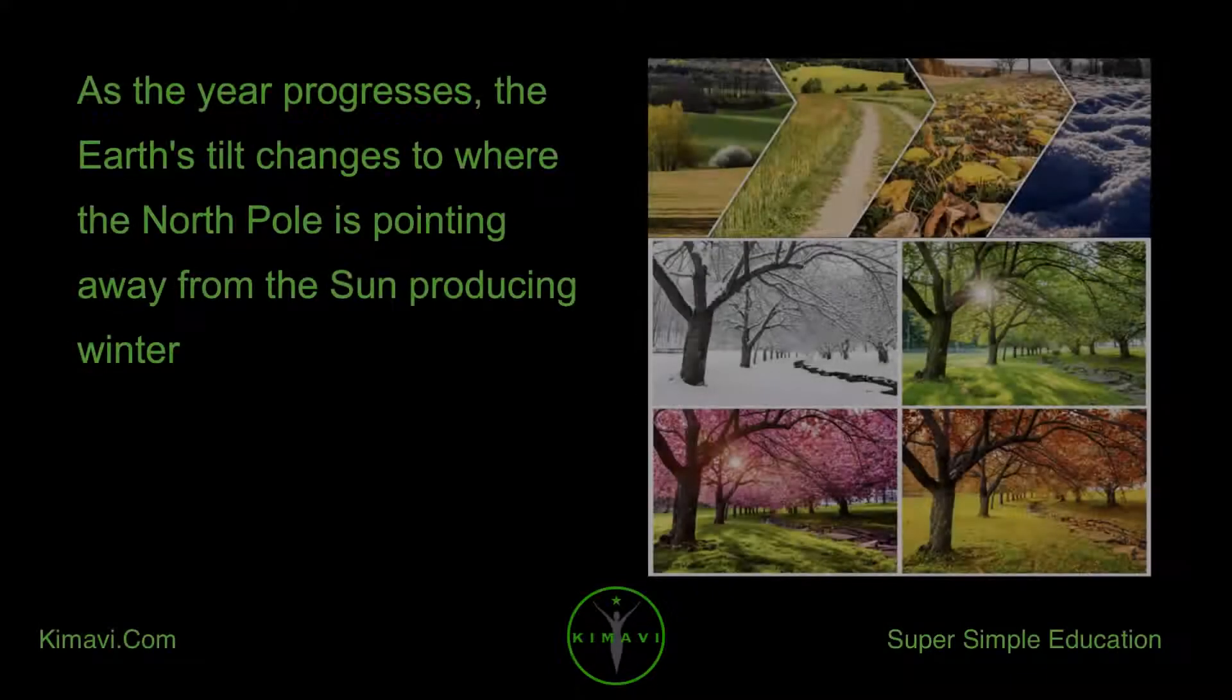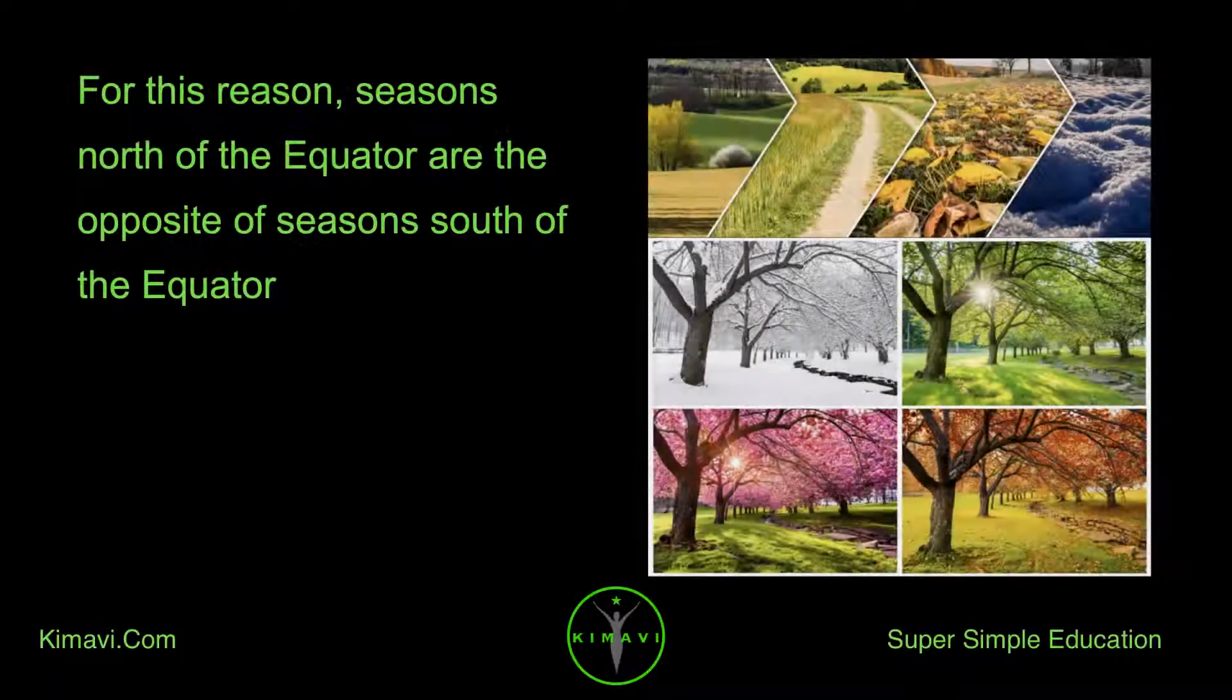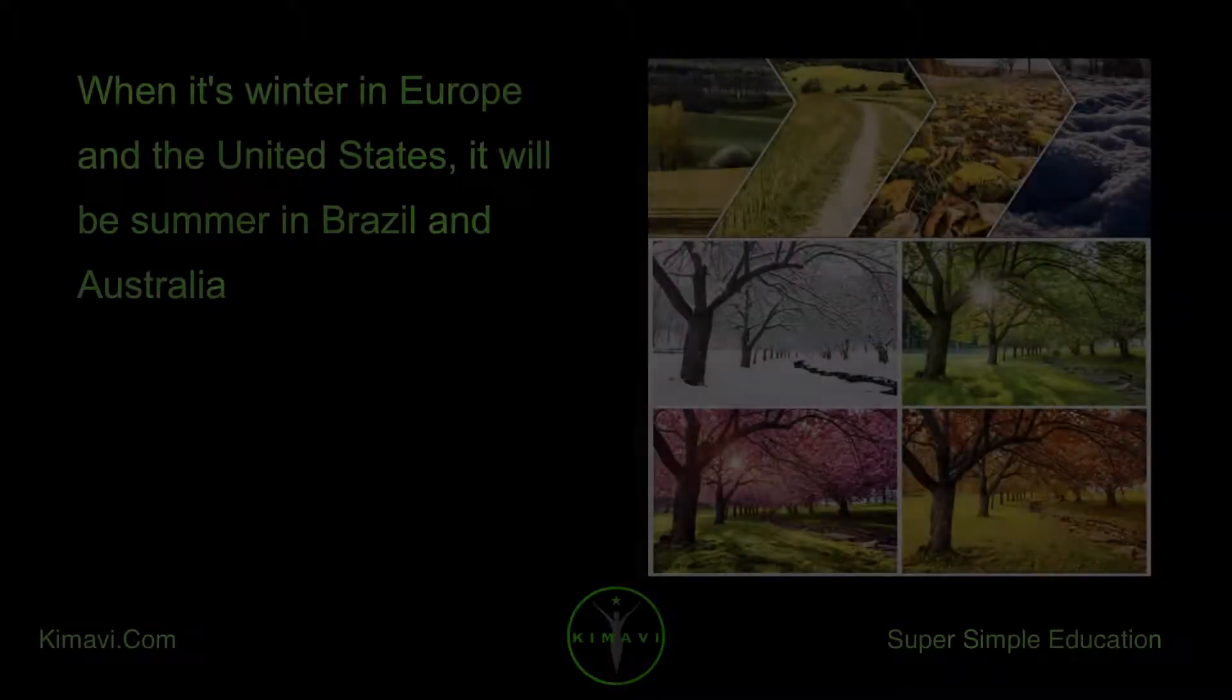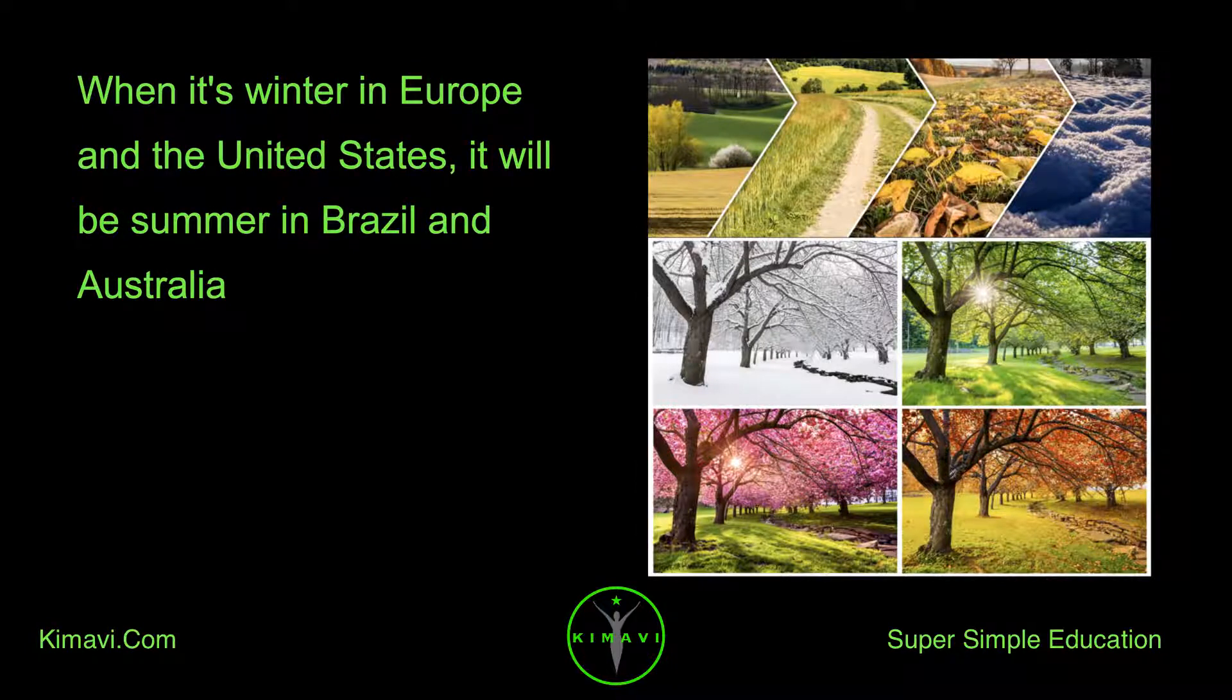As the year progresses, the Earth's tilt changes to where the North Pole is pointing away from the Sun-producing winter. For this reason, seasons north of the equator are the opposite of seasons south of the equator. When it's winter in Europe and the United States, it will be summer in Brazil and Australia.